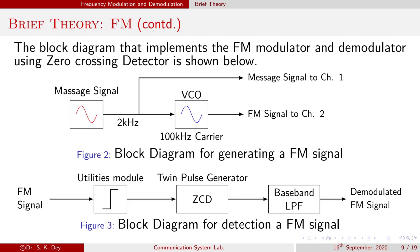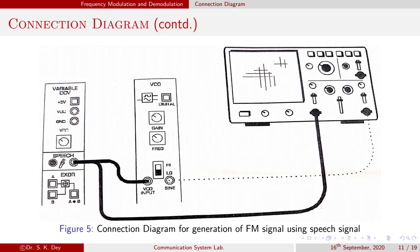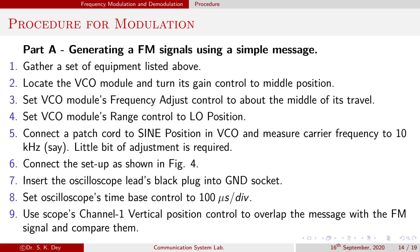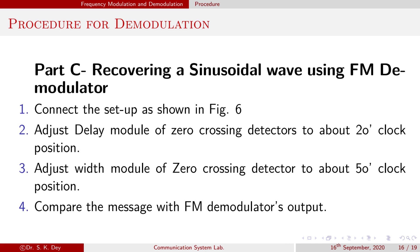This is the block diagram for generation of an FM signal as well as the detection of an FM signal. This is the connection diagram for generating an FM signal using a simple message signal, and this is the connection diagram for generation of FM signal using a speech signal. This is the connection diagram for detection of FM signal. These are the procedure steps for generating FM signal using a simple message signal, and for generating FM signal using a speech signal, and for recovering the message signal using an FM demodulator.